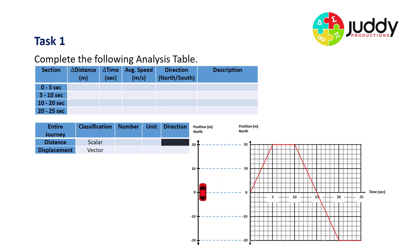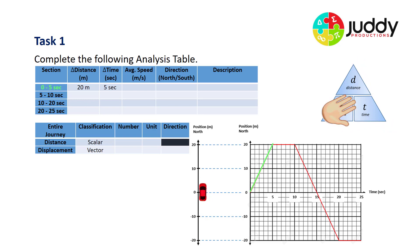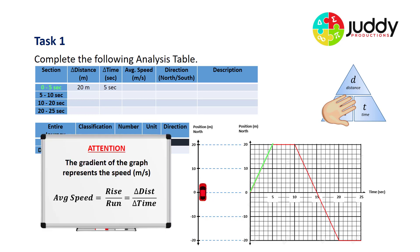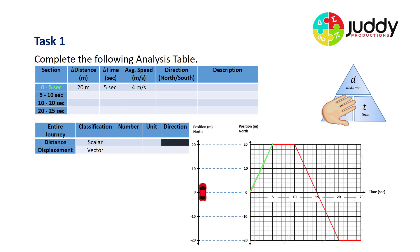Let's analyze this by filling in the table. From zero to five seconds, highlighted green on the graph, the distance traveled is 20 meters and the change in time is five seconds. To work out average speed, speed equals distance over time — or the gradient, rise over run. We've risen 20 meters and run five seconds, so 20 divided by five gives us an average speed of four meters per second.